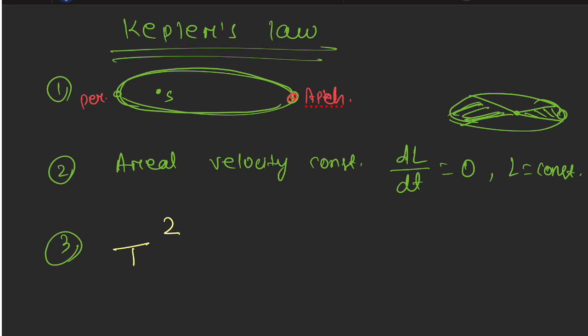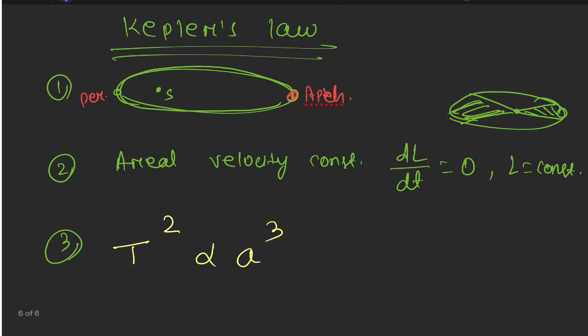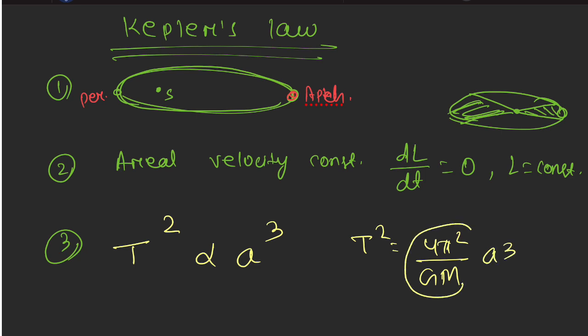Kepler's 3rd law: the time period squared is proportional to the semi-major axis cubed. The formula is T² = (4π²/GM) × a³. This ratio is an entire constant.